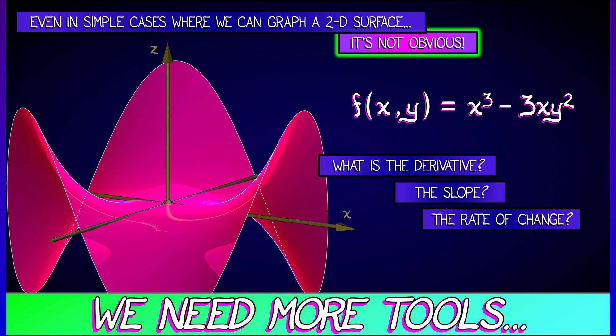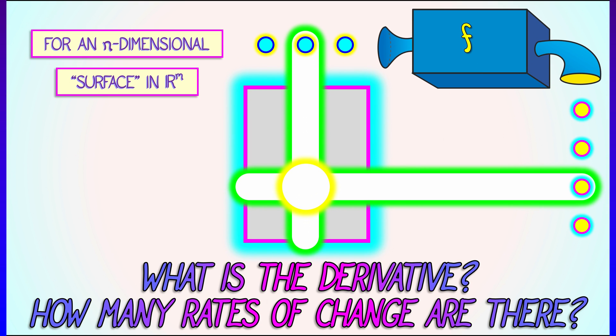In general, we need more tools. In the general case where we have some kind of n-dimensional thing inside of some m-dimensional space, it's specified by a function with n inputs and m outputs. What's the derivative? How do we keep track of all the different rates of change involved here?